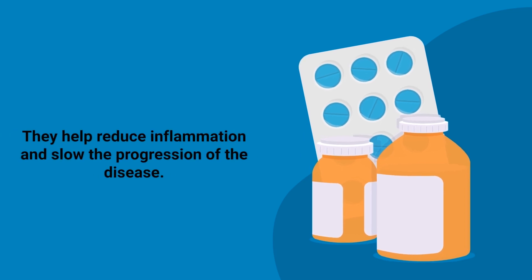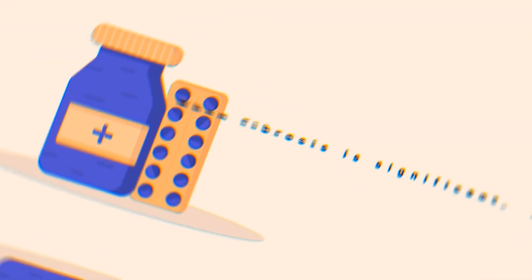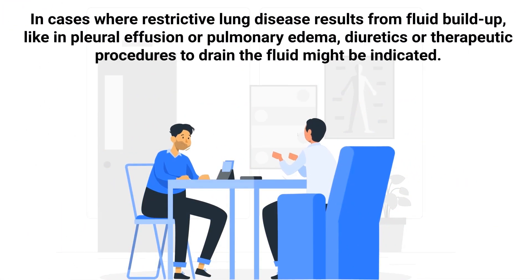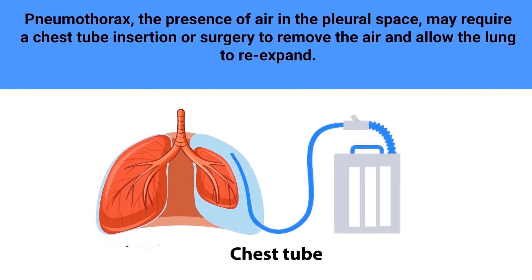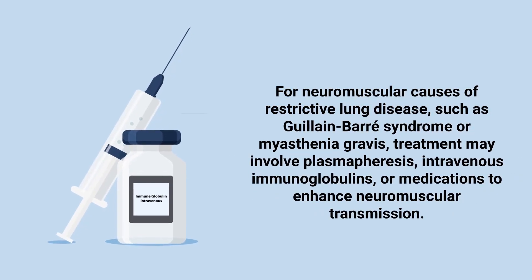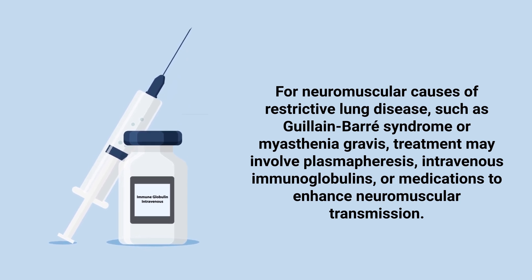These medications help reduce inflammation and slow the progression of the disease. When fibrosis is significant, as in pulmonary fibrosis, antifibrotic agents can be used to decelerate disease progression. In cases where restrictive lung disease results from fluid buildup like in pleural effusion or pulmonary edema, diuretics or therapeutic procedures to drain the fluid might be indicated. Pneumothorax may require a chest tube insertion or surgery to remove the air and allow the lung to re-expand. For neuromuscular causes like Guillain-Barré syndrome or myasthenia gravis, treatment may involve plasmapheresis, intravenous immunoglobulins, or medications to enhance neuromuscular transmission.